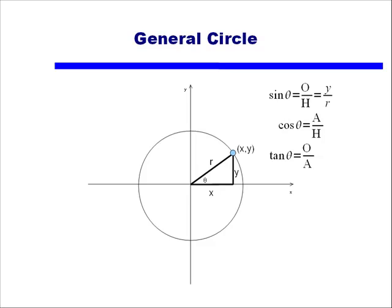Likewise, cosine is the adjacent side over the hypotenuse, or x divided by r.